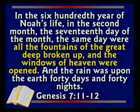Genesis 7 says: 'In the 600th year of Noah's life, in the second month, the 17th day of the month, the same day were all the fountains of the great deep broken up, and the windows of heaven were opened. And the rain was upon the earth 40 days and 40 nights.' The flood water didn't all come from rain. I think it came from three sources: rain, subterranean water from the fountains of the deep, and the canopy. Most came from inside the earth. Noah was in the ark for a year; the actual flood probably lasted 6 to 10 months.